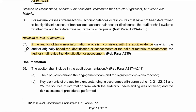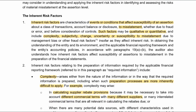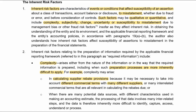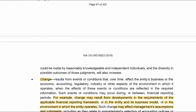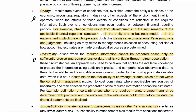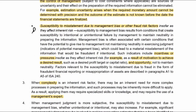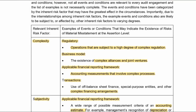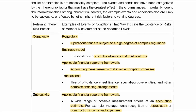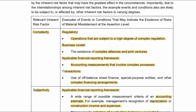Go to Appendix 2 quickly just to see those inherent risk factors. This is where the factors for determining likelihood and magnitude are listed. Here they all are: complexity, subjectivity, change, uncertainty, or susceptibility to misstatements. You can go into a whole range of examples of risks, and this is what you will use in a question — if you can't pick up risks in a scenario, open this up and see, for example, have there been changes in regulations?